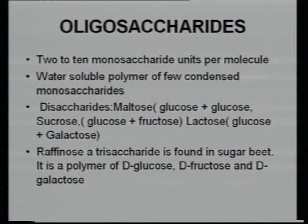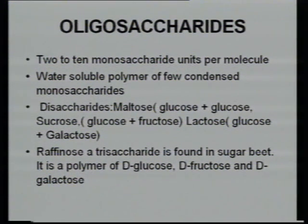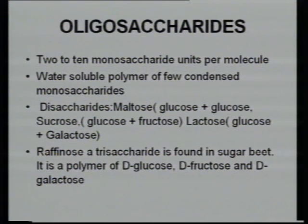Oligosaccharides are a combination of 2 to 10 monosaccharides per molecule. When 2 to 10 monosaccharides are present, they are known as oligosaccharides. When they combine together, they release a water molecule. Examples of disaccharides include lactose from milk — many people say they cannot take milk because of lactose intolerance. Lactose is made of glucose and galactose. Sucrose is glucose and fructose. Maltose is 2 molecules of glucose. Raffinose, present in sugar beet, is an example of trisaccharides — a polymer of glucose, fructose, and galactose.